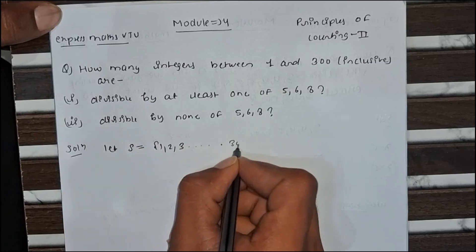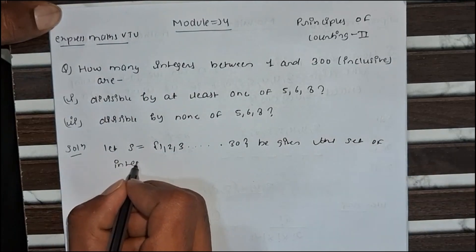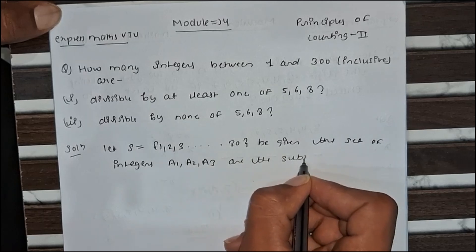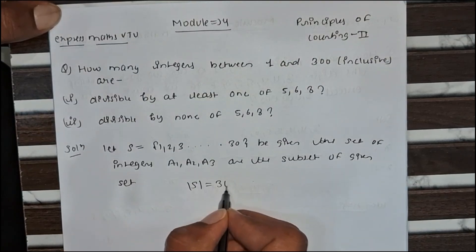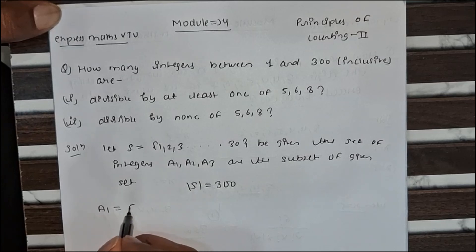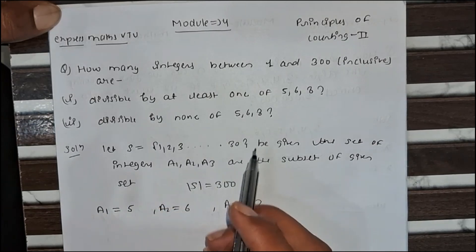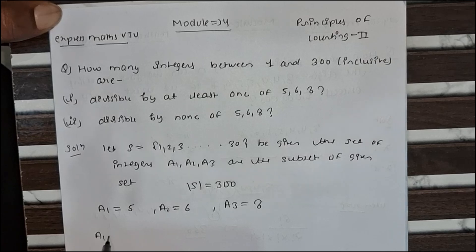Let S = {1, 2, 3, ..., 300} be the given set of integers, and A1, A2, A3 are subsets of the given set. The value of the set S equals 300 elements. A1 is the set of multiples of 5, A2 multiples of 6, and A3 multiples of 8. We have to find divisible by at least one of them, which means we need to find A1 union A2 union A3.